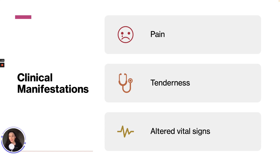Clinical manifestations in these patients include pain. At first there is a diffuse pain that tends to become constant, localized, and more intense over the site as the pathologic process occurs. There will be tenderness — the affected area of the abdomen becomes extremely tender and distended. The muscles become rigid and movement could aggravate it further. There will also be altered vital signs, usually an increase in temperature and an increase in pulse rate.